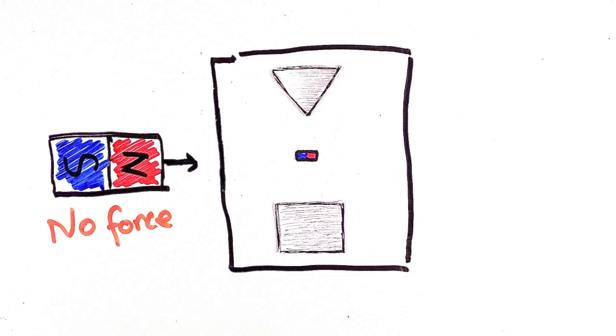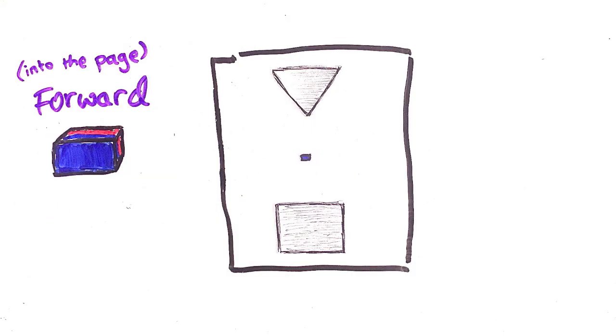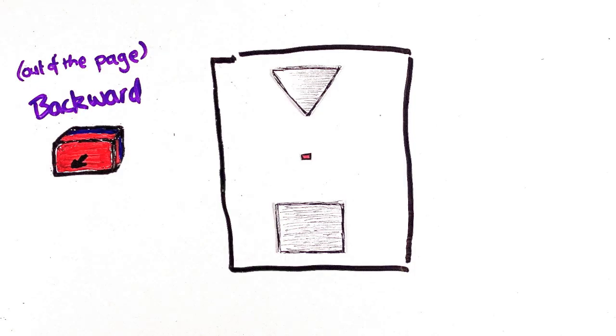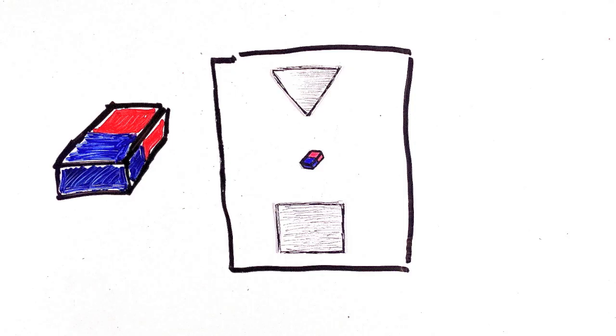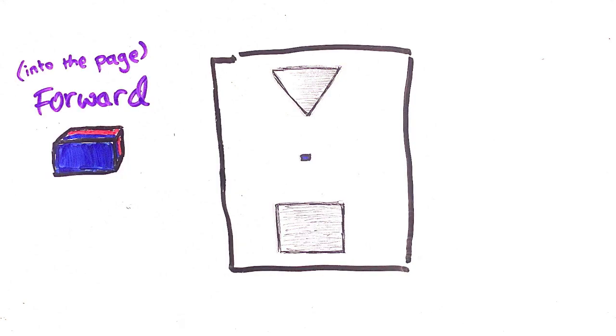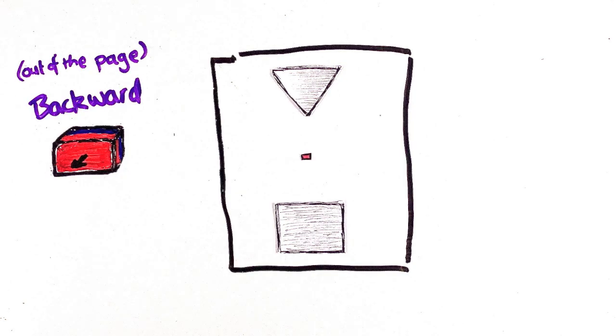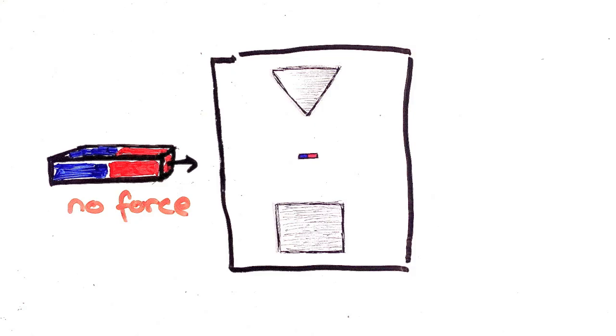But these aren't the only ways the magnet can be oriented either. It could be forward or backward or left or right or any combination. And so what happens there? Well, this machine only measures how much the magnet is up or down. If the magnet is like this, it's still pointing a bit upward. On the other hand, if the magnet was just pointing left or right or forward or backward, it wouldn't feel any force, and so it would go straight.